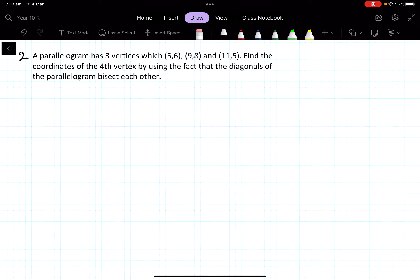So bisect means that they go through each other's middle. All right, bisect means they pass through the midpoint, which should give us a clue—this word is midpoint.